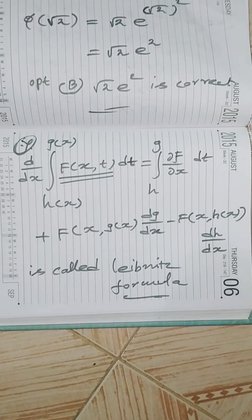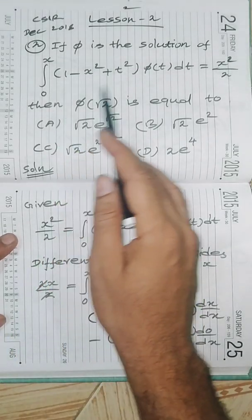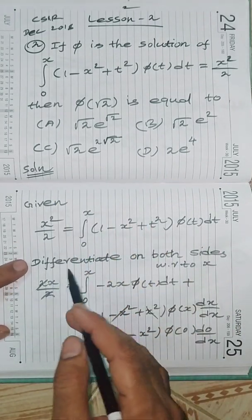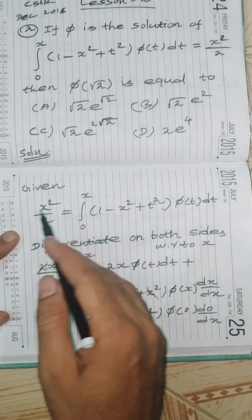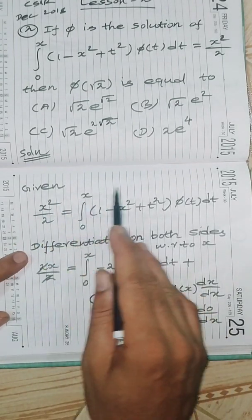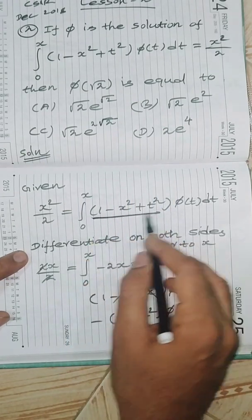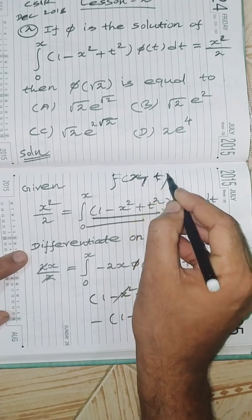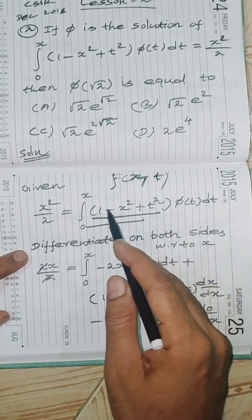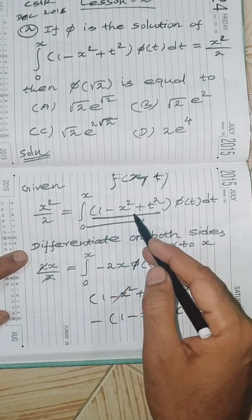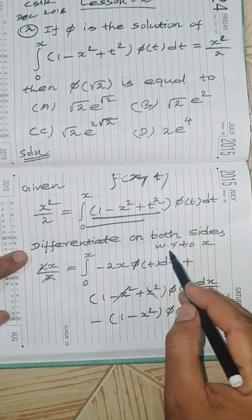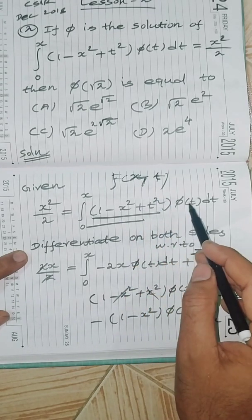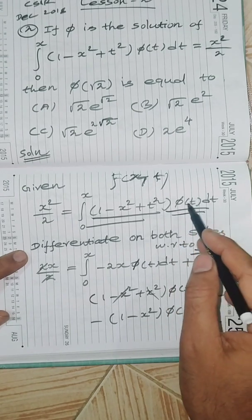Given the integral equation, rearranging for convenience: x²/2 equals the integral. Now differentiate both sides with respect to x. The left side gives x. Differentiating the integral using Leibniz rule: for the kernel function (1 - x² + t²), the partial derivative with respect to x gives -2x, which is independent of t, so it comes out: -2x·∫₀ˣ π(t) dt.